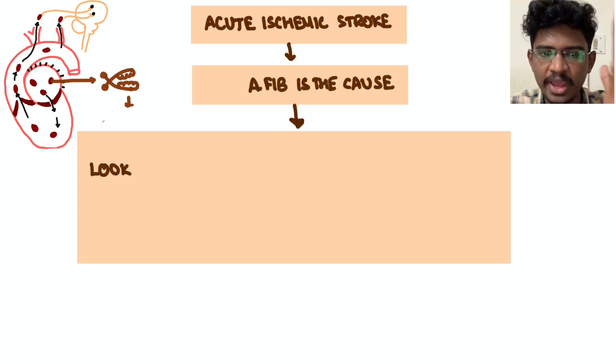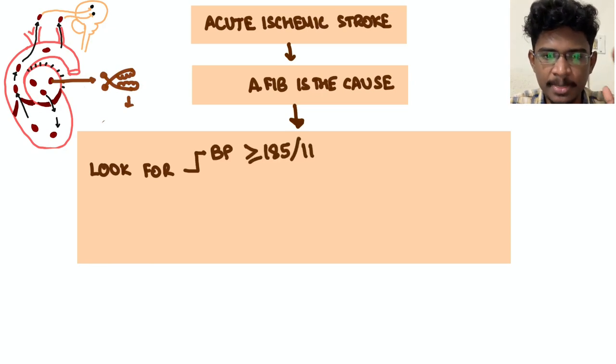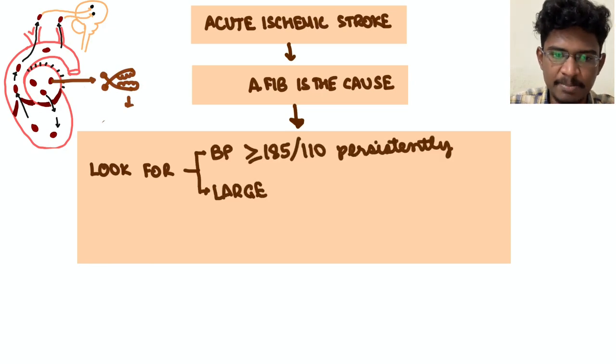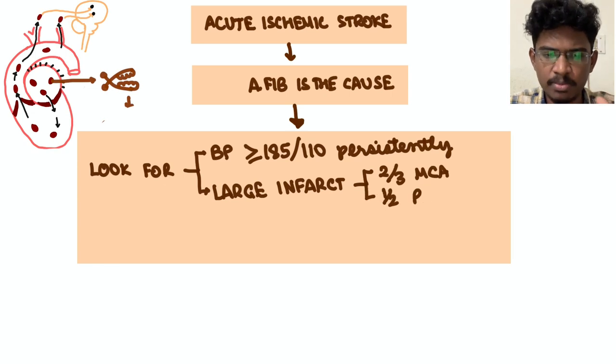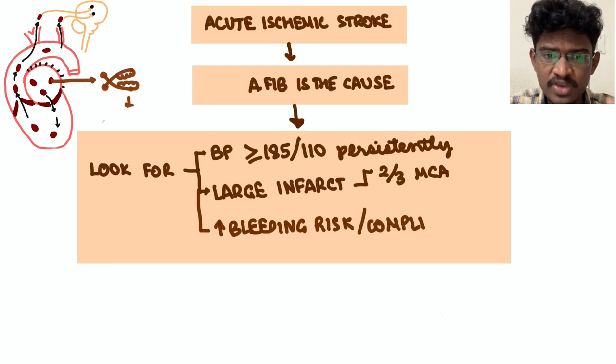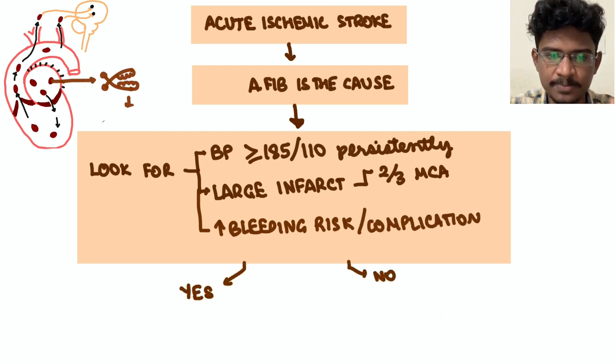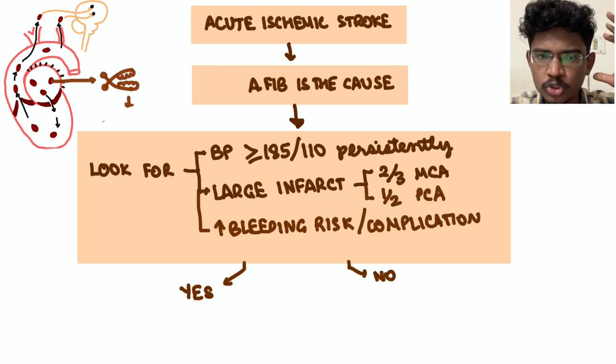So how to proceed with this? First you find acute ischemic stroke patient and you have found that it is due to atrial fibrillation, then check his BP. If his BP is persistently high, more than 185/110,